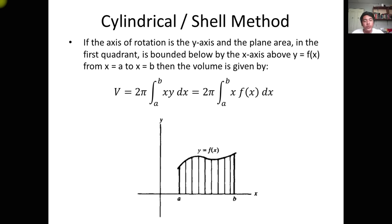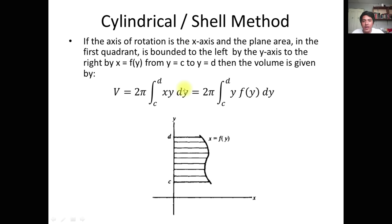For the cylindrical or shell method, the dx or dy is determined by the axis of rotation — but it is the opposite of the disk/washer method. If the axis of rotation is the Y-axis, you have dx. If you have an X-axis of rotation, you have dy.